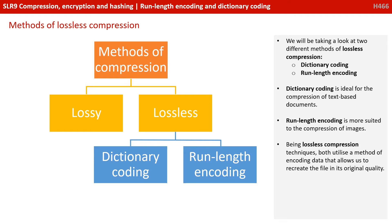Dictionary coding and run-length encoding are two methods of lossless compression. Dictionary coding is ideal for the compression of text-based documents, whereas run-length encoding is more suited to the compression of images. Being lossless compression techniques, both utilize a method of encoding data that allows us to recreate the file in its original quality.